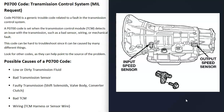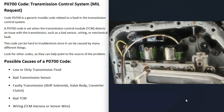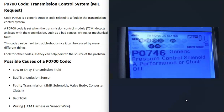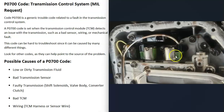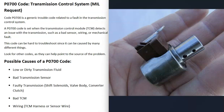The next possible cause is some kind of issue inside the transmission itself, such as a bad shift solenoid, the valve body, or the converter clutch. Again, if this is the case, you'd typically get another code. For example, a P0746 code — pressure control solenoid A performance or stuck off — would indicate a shift solenoid issue. You can locate it on the transmission, remove it, run tests on it, and check the wiring.